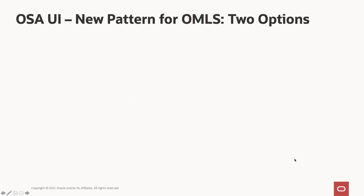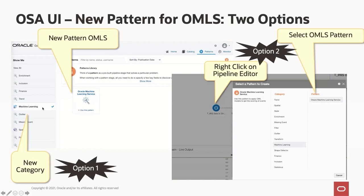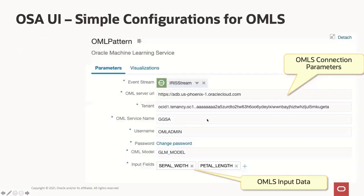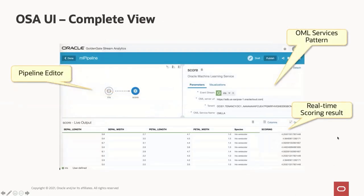For the OSA UI patterns for OML integration, there are two options. Option one: create a new pattern using the OML service — a ready-to-use pattern. Option two: while in the pipeline editor, create a machine learning stage directly. The OSA UI is straightforward — you configure basic parameters such as the OML service server URL, tenant name, service name, username, password, model name, and the input fields to provision. You also have the option to score as an individual event or as a batch event.